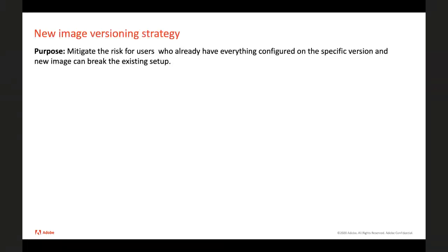The next topic is the new image versioning strategy. In the previous Docker version, we tagged images only for the latest patch version, which might cause problems for users who already have everything configured for a specific version — a new image could break their existing setup. But now we can pin a patch version and avoid upgrading to a new one, making our Docker environment a bit more stable.